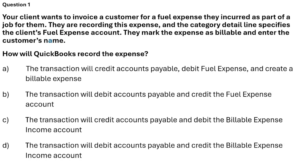Option A: Transaction will credit accounts payable, debit fuel expense, and create a billable expense. Option B: Transaction will debit accounts payable and credit the fuel expense. Option C: Transaction will credit accounts payable and debit the billable expense income account. Option D: Transaction will debit accounts payable and credit the billable expense income account. The correct answer is Option A — the transaction will credit accounts payable, debit fuel expense, and create a billable expense.